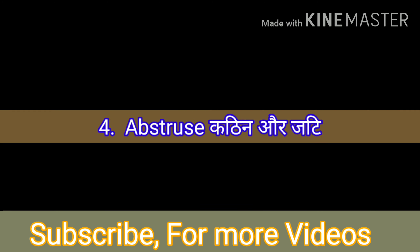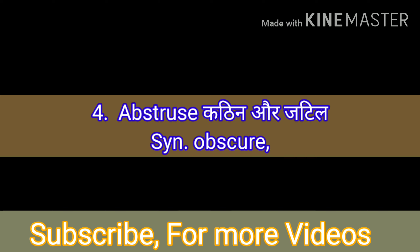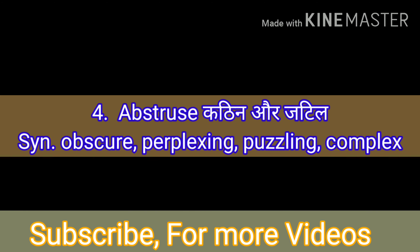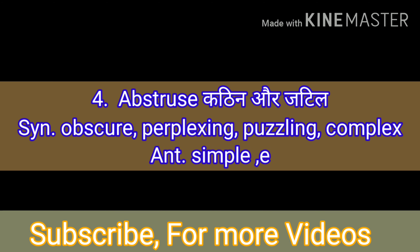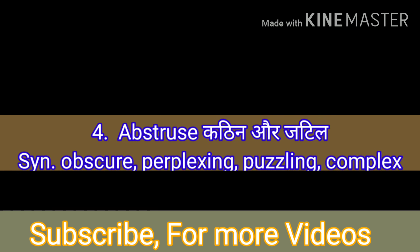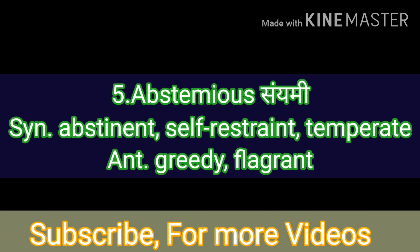The fourth word is 'abstruse', which means 'jatil' or 'kathen'. Synonyms of this word are: obscure, perplexing, puzzling, and complex. Antonyms of this word are: simple and easy.